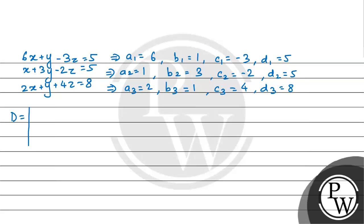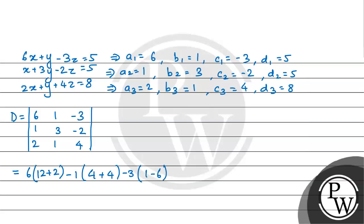Now we can find the value of determinant D. D equals the matrix with rows [6, 1, −3], [1, 3, −2], [2, 1, 4]. This equals 6 multiplied by (12 plus 2), minus 1 multiplied by (4 plus 4), minus 3 multiplied by (1 minus 6). That gives 6×14 minus 1×8 minus 3×(−5), which equals 91.